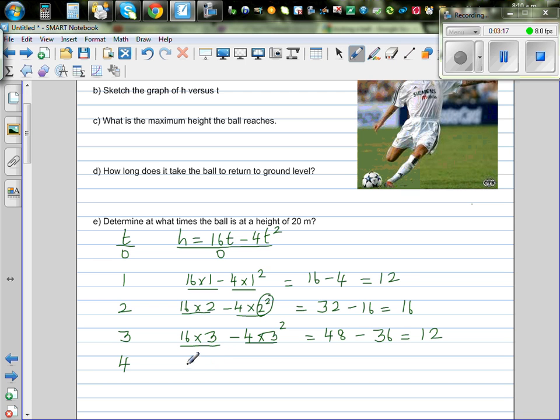So 4, it will be 16 times 4, minus 4 times 4 squared. 16 times 4 is 64, minus 64, which is 0. So what is this table telling me? So when the ball was kicked, it is on the ground and after 4 seconds it is again on the ground. So I hope you understand that anything that goes up has to come down.